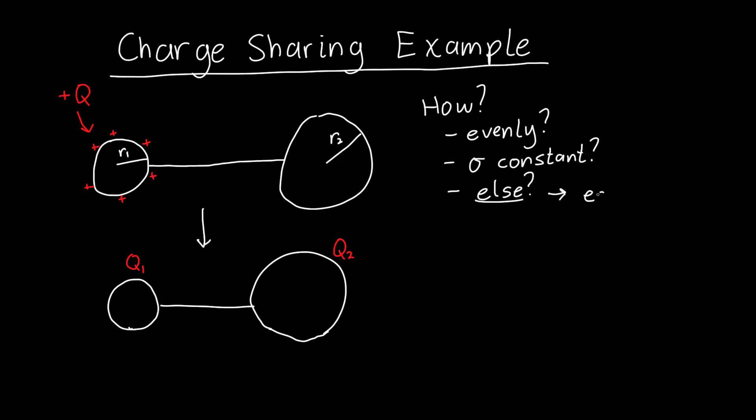The key is that the system is in equilibrium. That means that no charge is moving from one sphere to the other sphere after we've allowed the charge to redistribute itself. That means there is no electric field along this wire pointing from either sphere. Because if there was, then some of the charge would move. But the system is in equilibrium, so the electric field has to be equal to zero. There is no electric field along the wire.